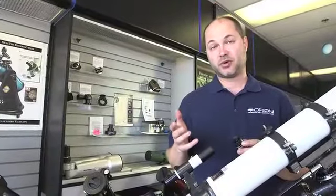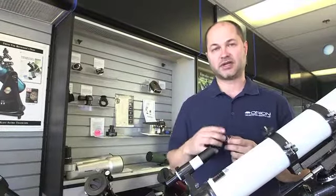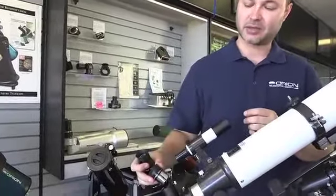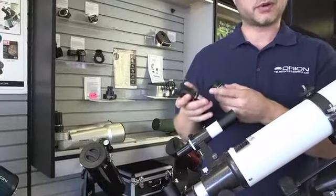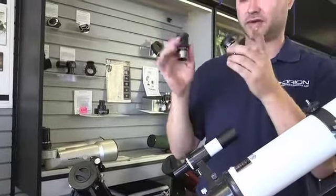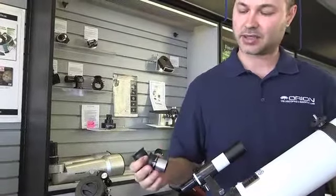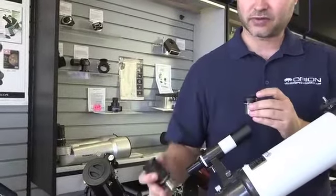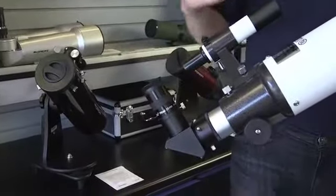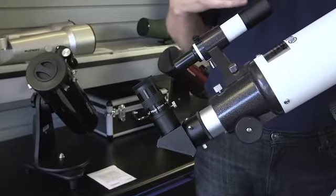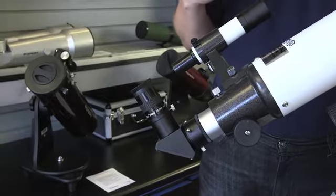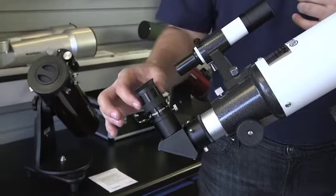The telescope comes with two eyepieces, and the eyepieces are what give you the different magnifications. You've got a 25 millimeter here and a 10 millimeter. The lower the number, the higher the power. It's kind of the opposite of what you think. So your 25 is the low power wide field of view, and the 10 millimeter is the high magnification. So the rule of thumb is always start with the low power. Start with your 25 millimeter. That gives you a nice wide field of view. It makes it easy to find things in the night sky. I think you'll find that a lot of objects look best at the lower power. So start with a 25.